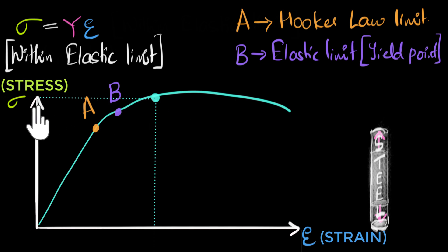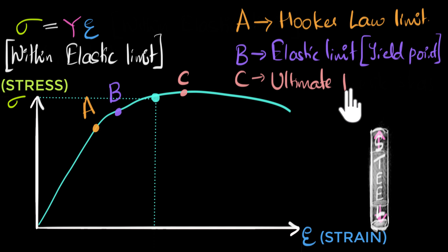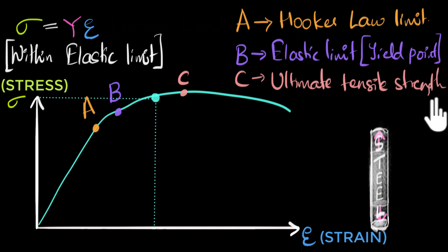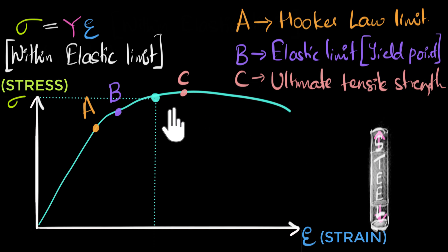The topmost point of this graph — the highest stress we can get — we call it point C. This point is called the ultimate tensile strength. It's called ultimate because this is the maximum stress your material can handle without getting seriously damaged. So if you don't want to damage your material, don't go beyond this point.